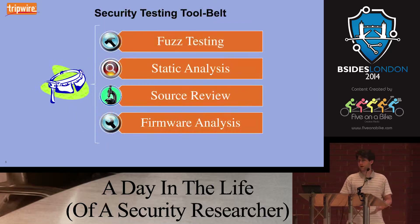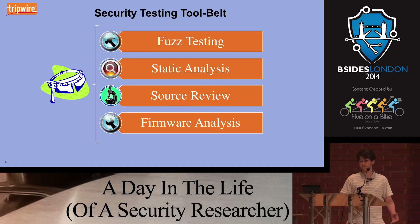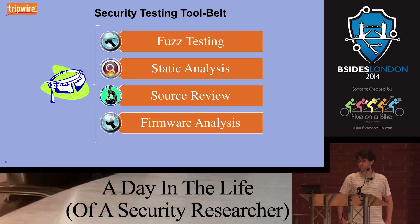I've set up what I like to refer to as a security testing tool belt. In this we have your hammer, which is your fuzz testing, where you're basically just banging away at something until you get it to break. Static analysis is kind of more like your magnifying glass — you're taking a closer look at the binaries themselves, seeing what calls are made in them. Source review is your microscope: you're going to look through source code whenever available and look for patterns of vulnerable code. And of course, firmware analysis applies mostly towards embedded systems.